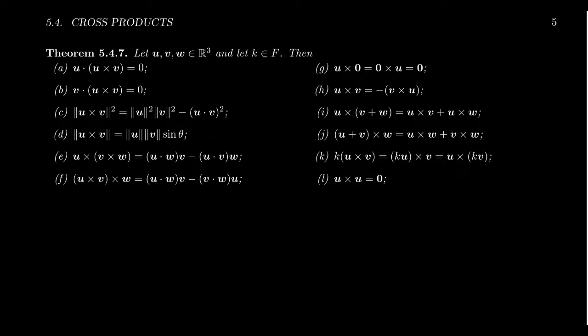But some things we can say are the following. If you take the cross product of U and V and you dot it with U, you end up with zero. This is to say that U is orthogonal to U cross V.